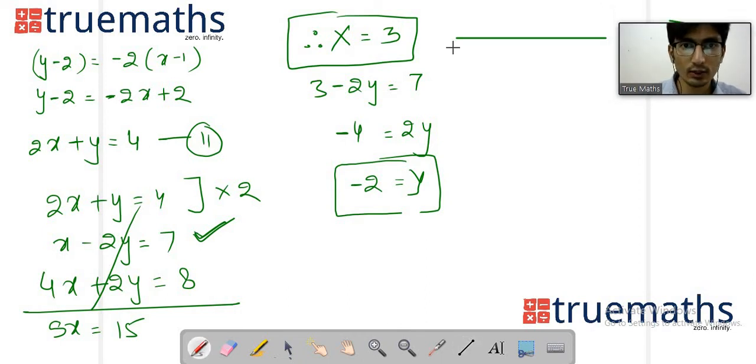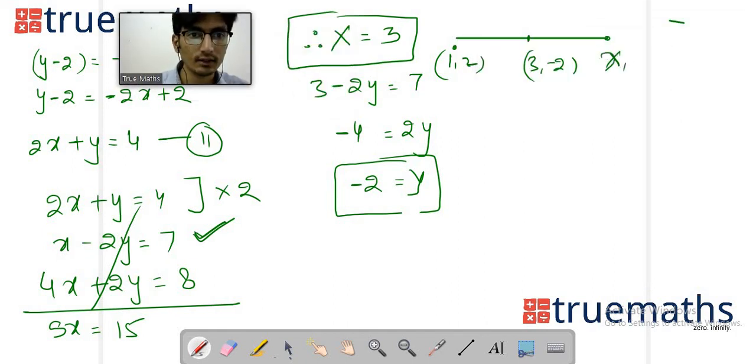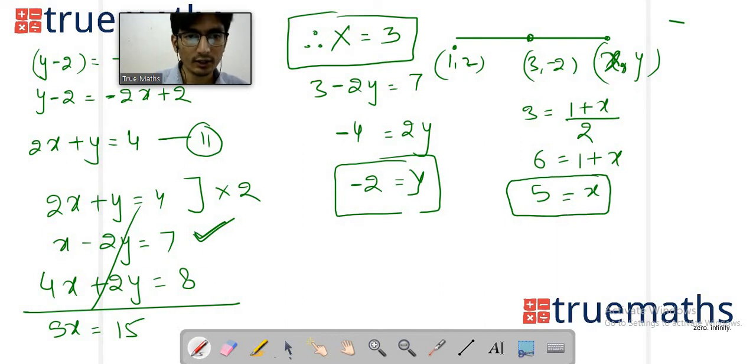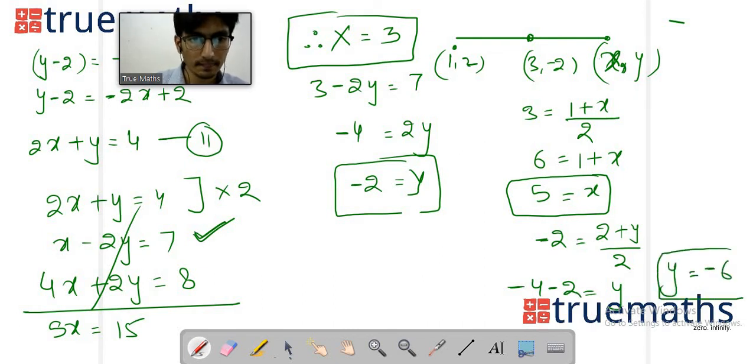Now you know coordinates (1,2), midpoint (3,-2), and you have to find the image point (small x, small y). Using midpoint formula: add x1 and x2, divide by 2 equals 3. Cross multiply gives 6, subtract to get x value = 5. Similarly for y coordinate: add y1 and y2, divide by 2 equals -2. Cross multiply gives -4, so y value = -6.